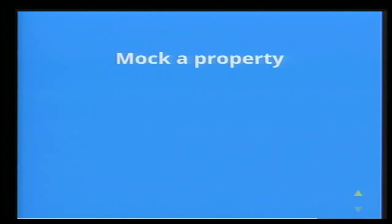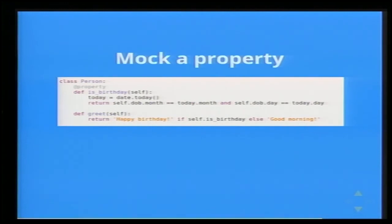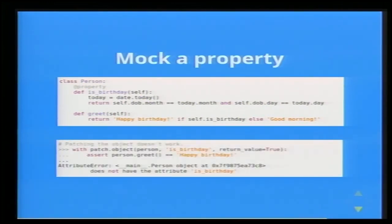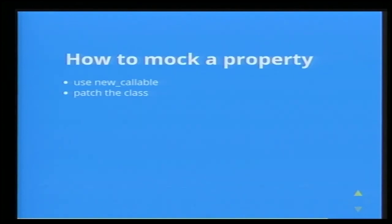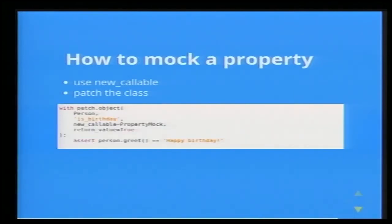If you want to mock a property — for example, I've made birthday a property on my Person class — if you try to use patch.object, that doesn't work and you get an error. It's something to do with the way properties work. For that, there's a parameter called new_callable which lets you say what type of mock you want to create. There's a special mock class called PropertyMock set up just for this purpose. The other thing is that you need to patch the class rather than the object, which might be a little limiting, but as far as I know that's the only way to do it.